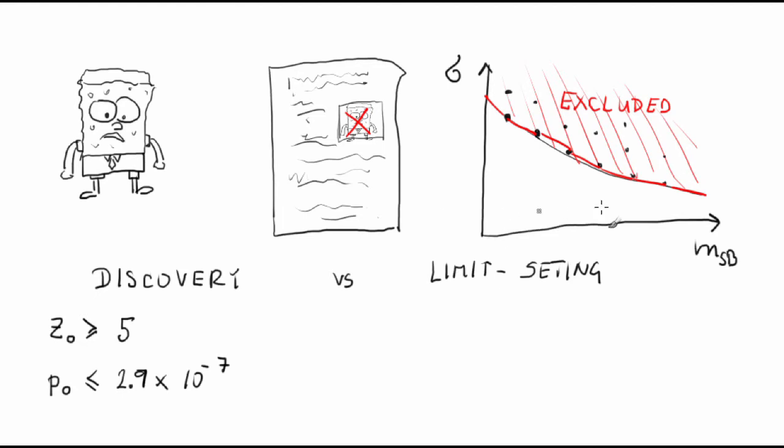On the other hand, an exclusion of one point in a huge parameter space of one of many new theories has less consequences and, therefore, a typical size of a test is much lower. The most common test size is, nowadays, 0.05.